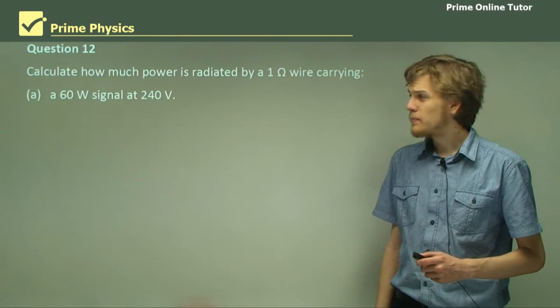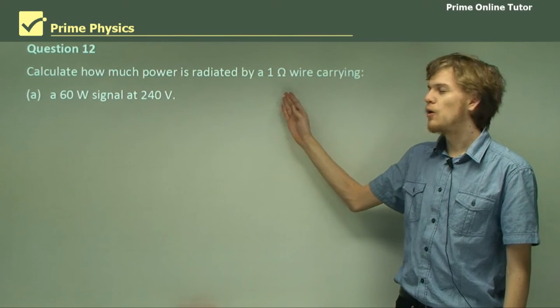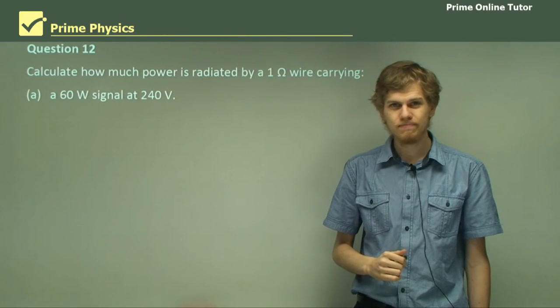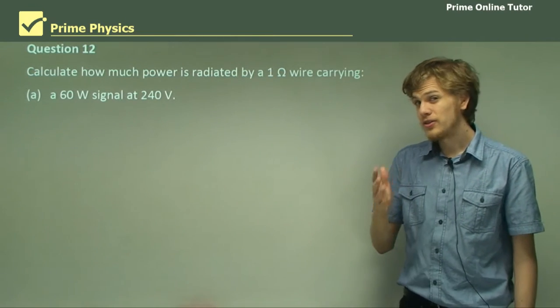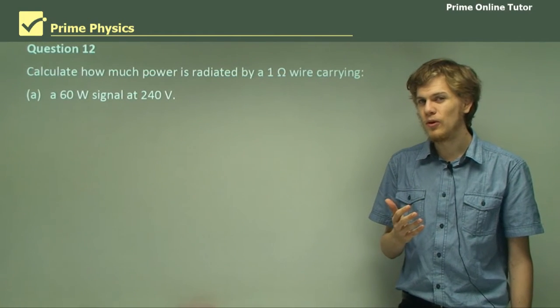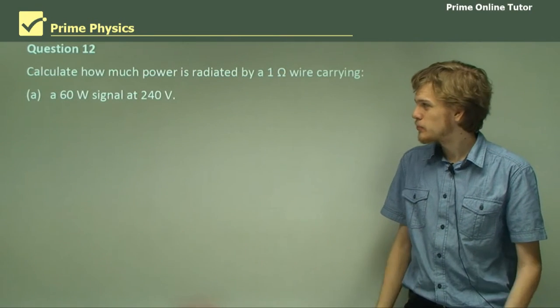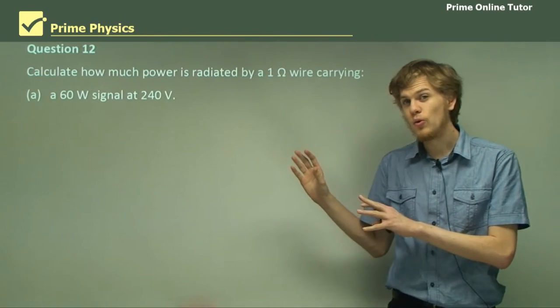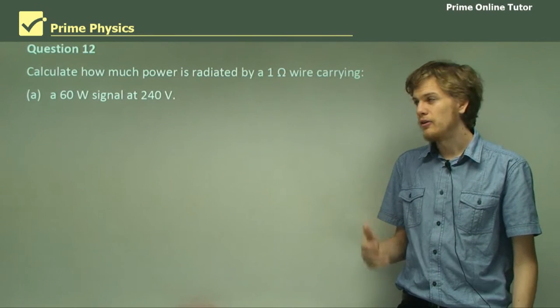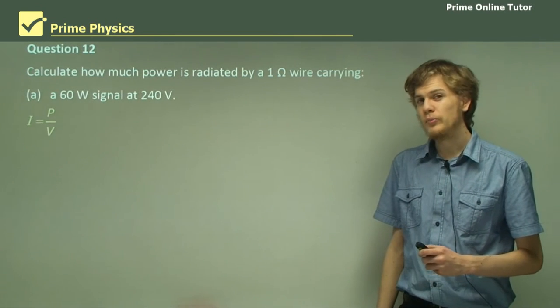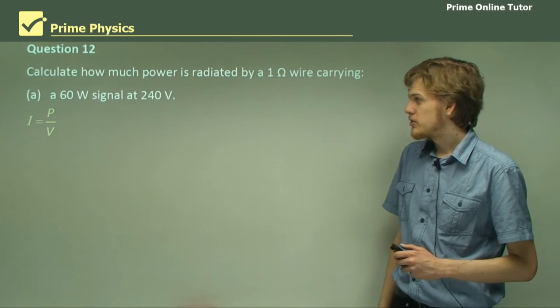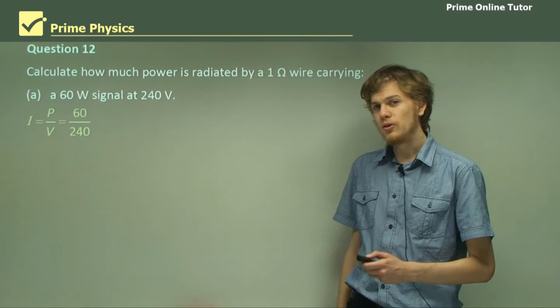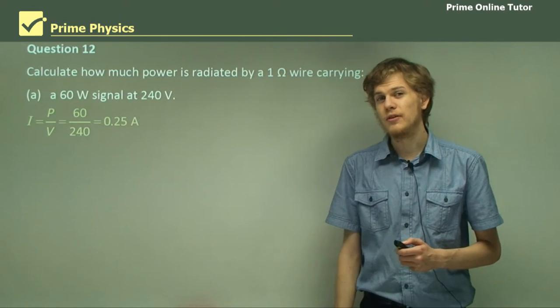Question 12, calculate how much power is radiated by a 1 ohm wire carrying a 60 watt signal at 240 volts. So to figure this out, we're going to need to work out the current through the wire. So if we have a 60 watt signal at 240 volts, then the current that the wire is drawing can be found with this equation. I equals P on V. Substitute 60 watts and 240 volts, and we end up with an answer of 0.25 amps.